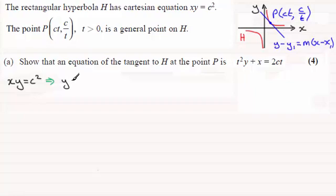I'm not going to do that way. I could rearrange it make y the subject and that'd be y equals c squared over x. But there's nothing to stop you doing implicit differentiation. In fact as an exercise I would encourage you to have a go at that. The other way would be to do it by parametric differentiation which I'll show you as well.